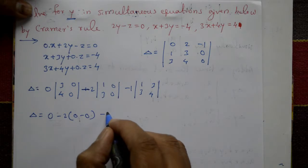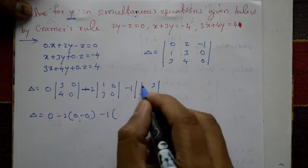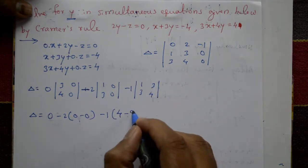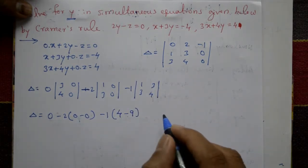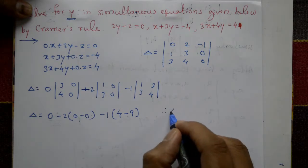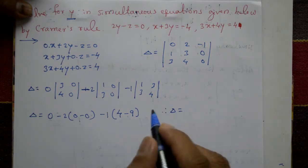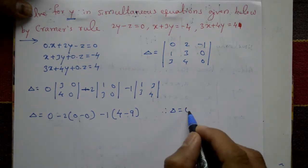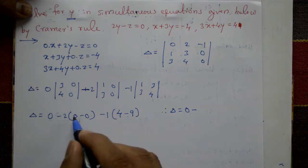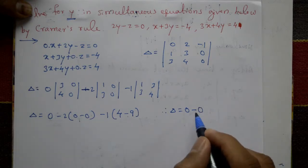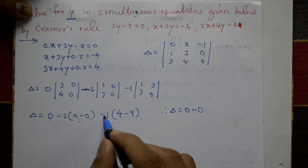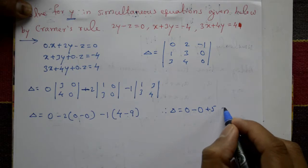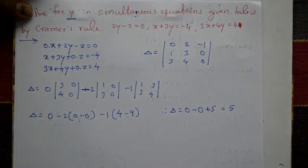Expanding: 0 times (3·0 minus 4·0) equals 0, minus 2 times (1·0 minus 3·0) equals 0, minus 1 times (1·4 minus 3·3) equals minus 1 times (4 minus 9) equals minus 1 times minus 5 equals 5. Therefore delta equals 5.